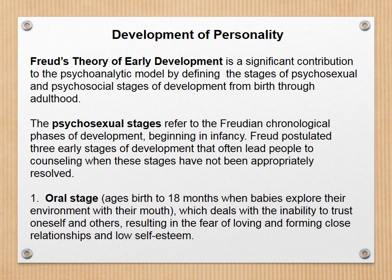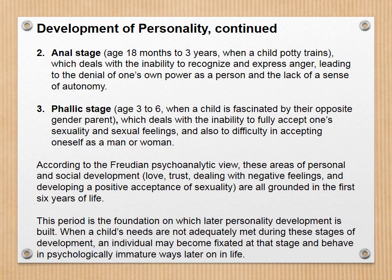You put anything near a baby and they grab it and put it in their mouth — whether it's keys, a lollipop, or a finger. This stage deals with the inability to trust oneself and others, resulting in fear of loving and forming close relationships and low self-esteem. The anal stage, ages 18 months to 3 years during potty training, deals with the inability to recognize and express anger, leading to denial of one's own power and a lack of autonomy or independence.